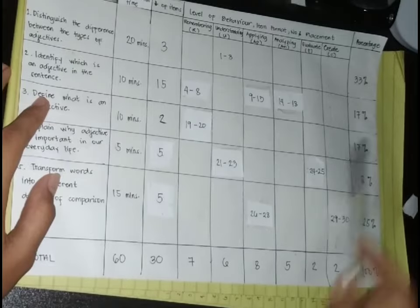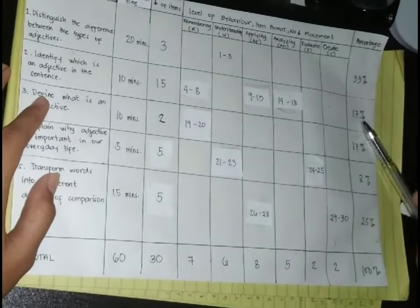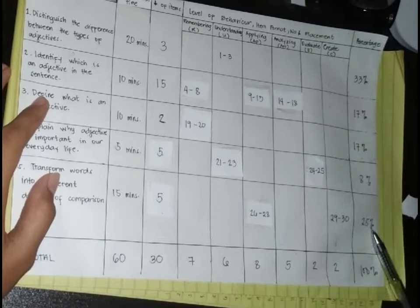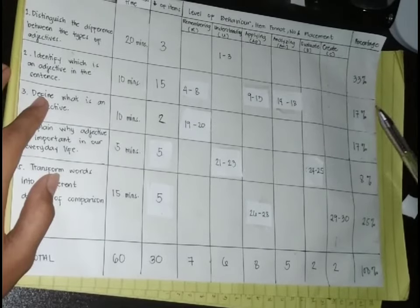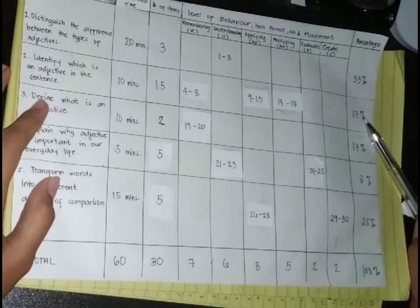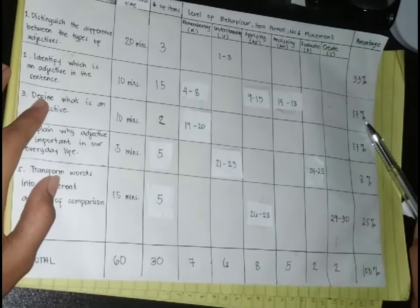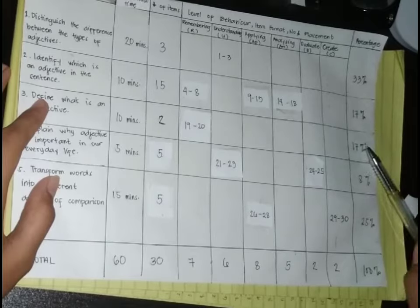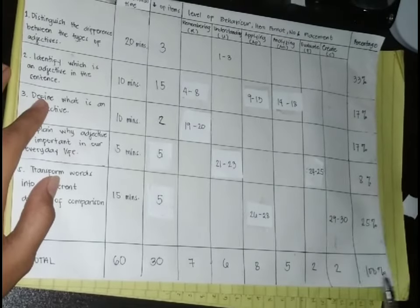For example, 20 minutes divided by 60 multiplied by 100 is 33%. For the percentage, we have to get a whole number. Like in 17%, the total calculation is 16.6 and we have to round it up to get 17%.